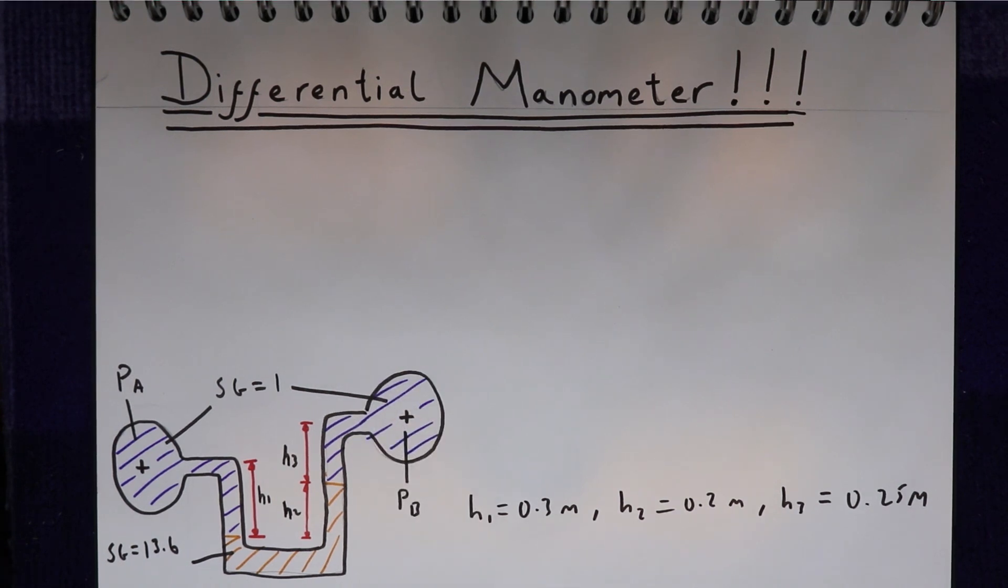So what this means is, if we know all of the heights of the fluid in the manometer and we know the pressure in this pipe Pb, we can work out the pressure in this pipe Pa. Or if we know the pressure in this pipe Pa, we can work out the pressure in this pipe Pb.